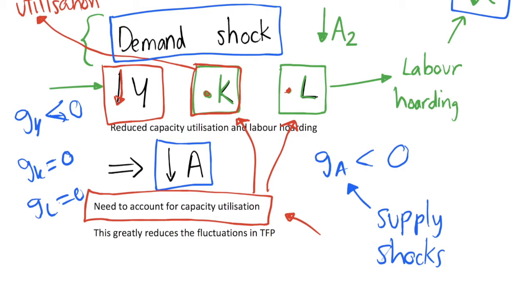So once we account for this capacity utilization, this greatly reduces the fluctuations we see in TFP and we start to just be able to see something that we can potentially model as some constant growth rate in technology, because it is just looking more at supply side shocks and technological innovations.